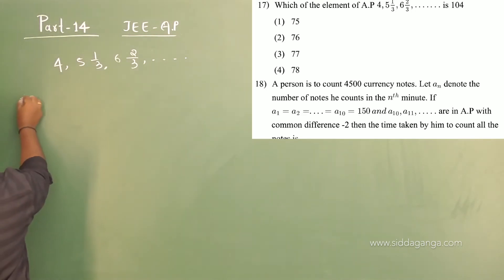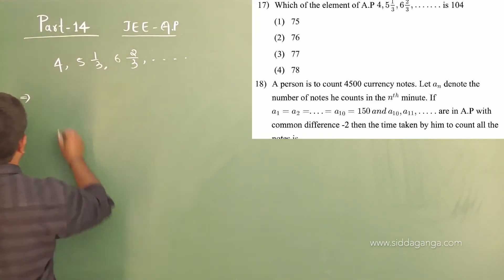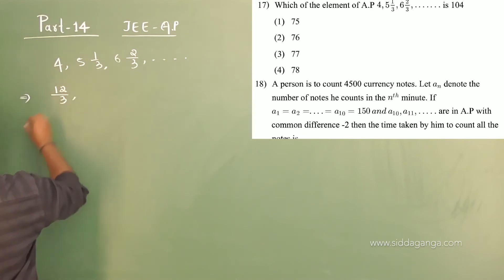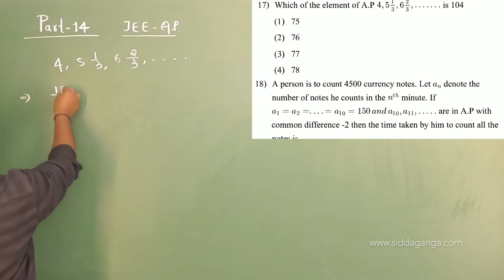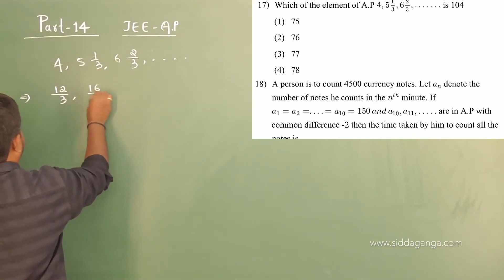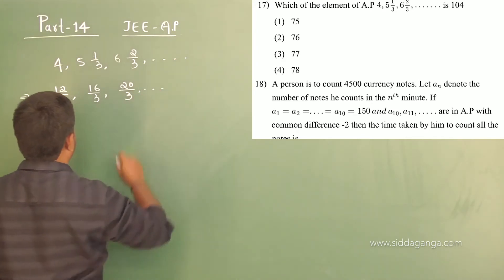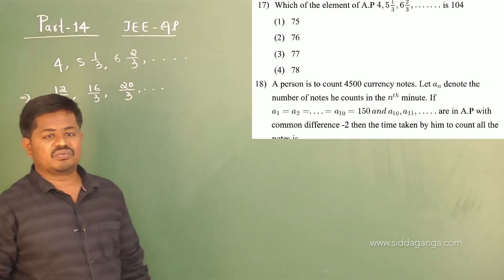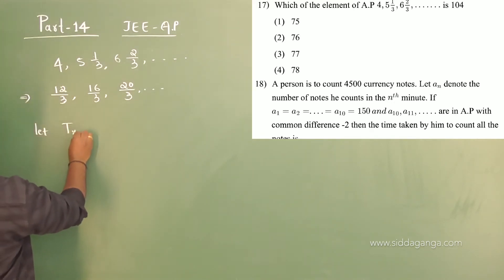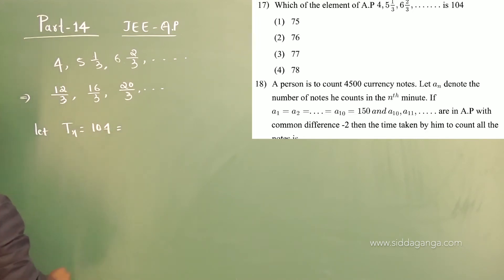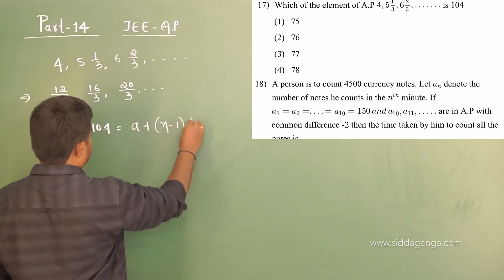Let me rewrite this. With denominator 3, I can write 12/3, 16/3, 20/3, and so on. So this is the required AP. Now let us assume 104 is the nth term of this sequence. Let t_n equal 104. Then using a plus (n minus 1) times d, let me find n.